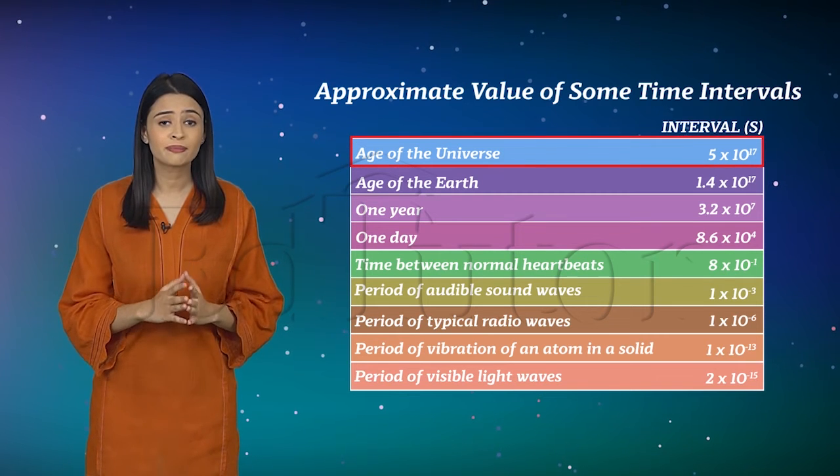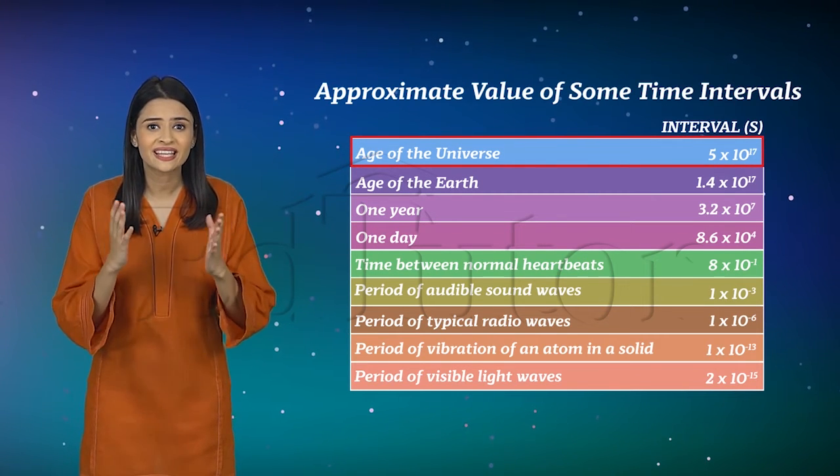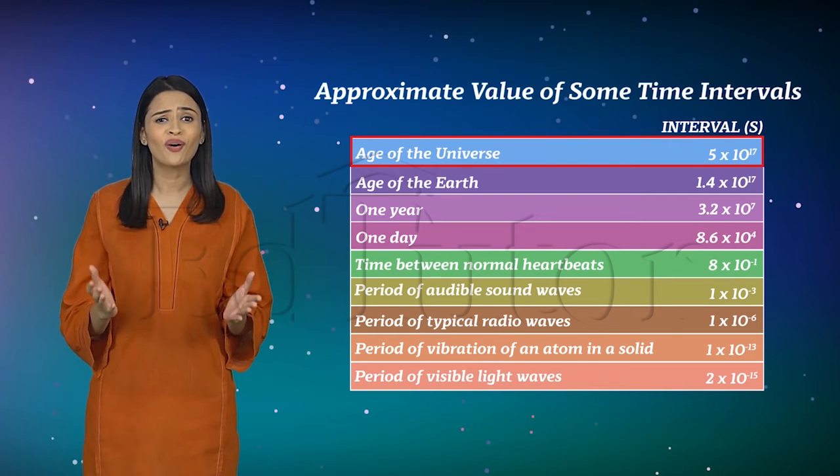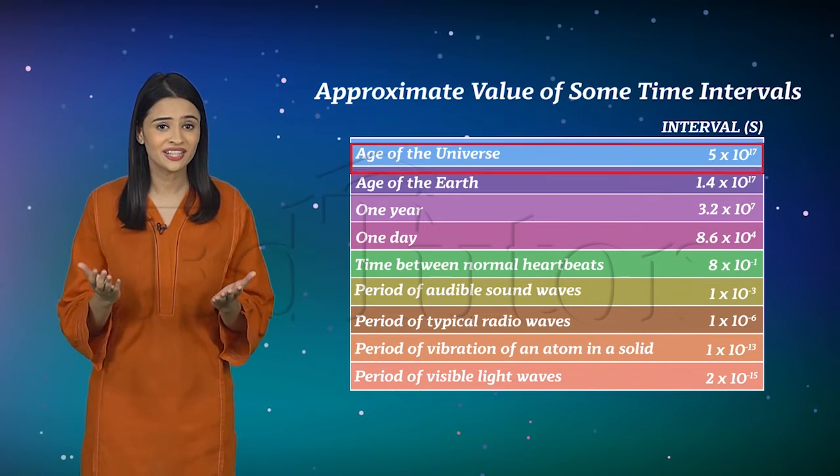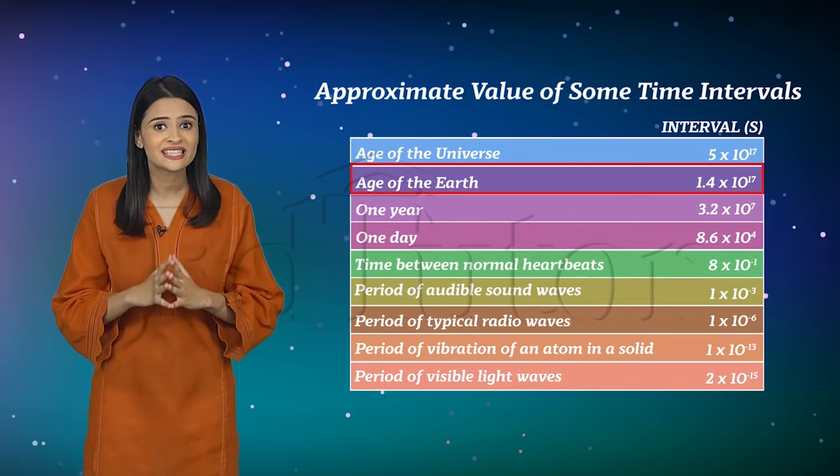The age of the universe is about 5 into 10 raised to the power 17 seconds. That's quite a long time. The age of Earth is 1.4 into 10 raised to the power 17 seconds.